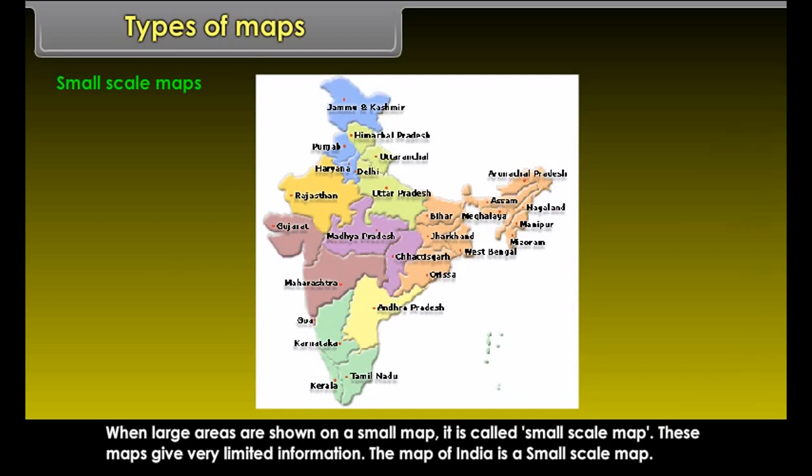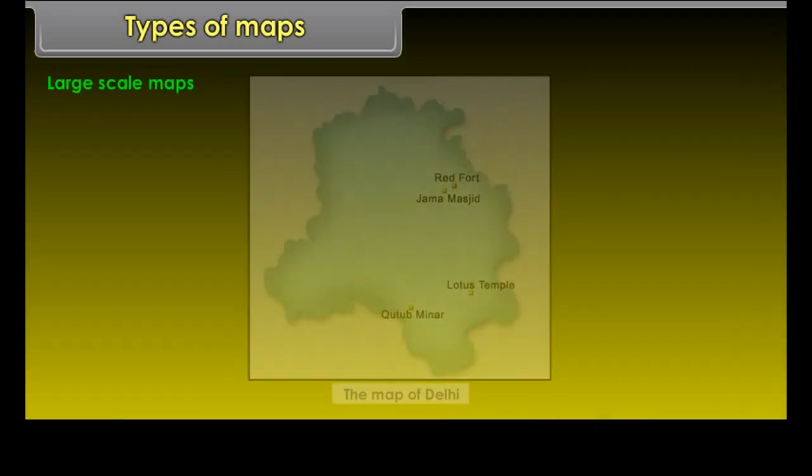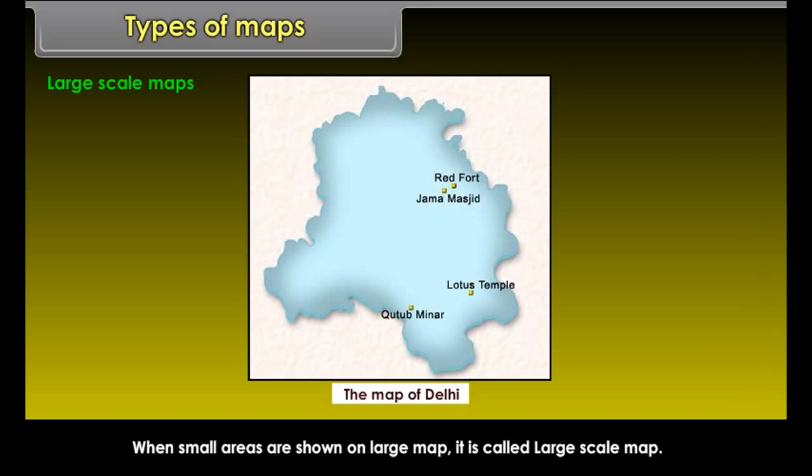There are two types of maps based on scale: Small Scale Maps and Large Scale Maps. When large areas are shown on a small map, it is called Small Scale Map. These maps give very limited information. The map of India is a small scale map.